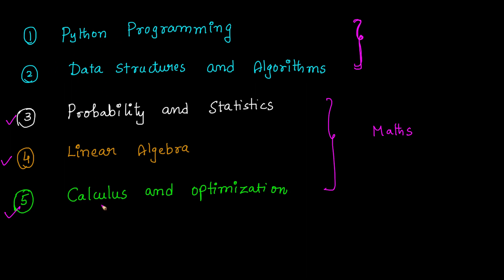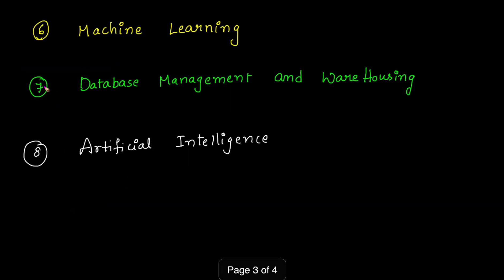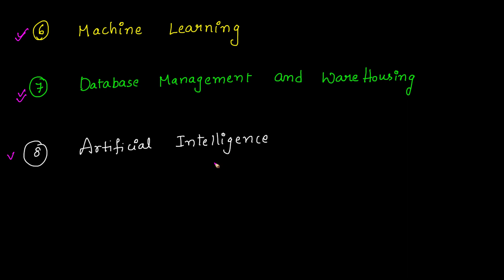Then you should focus on the two important subjects which were recently added in this paper — Machine Learning and Artificial Intelligence. First you should focus on the Machine Learning algorithms, then Database Management and Warehousing, and finally you should focus on the Artificial Intelligence subject.